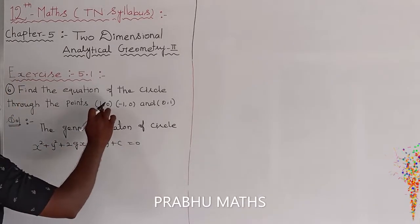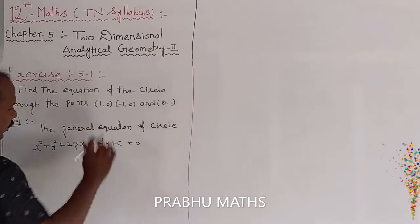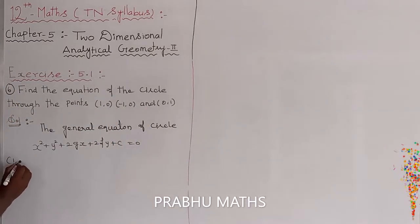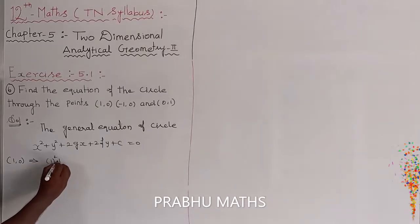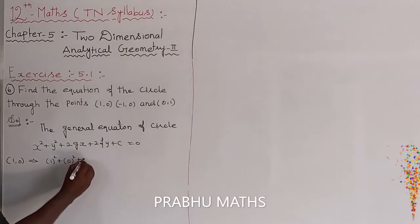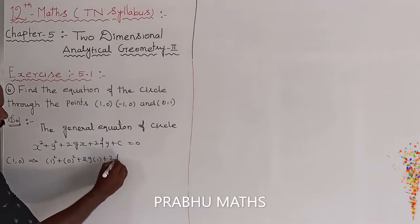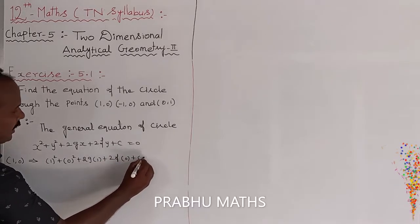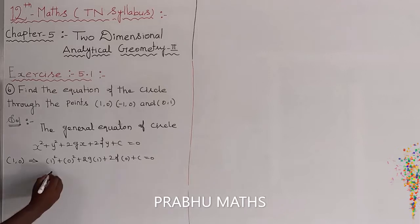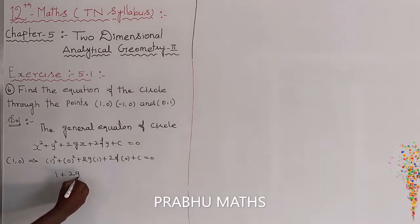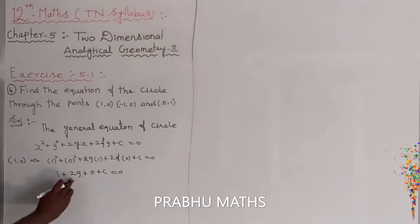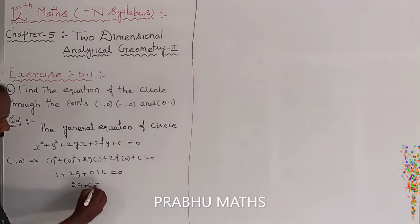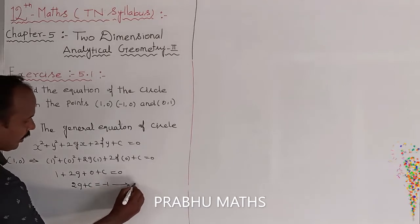That circle is passing through three points. The first point is (1, 0). Substituting the values of X and Y: 1 squared plus 0 squared plus 2G into 1 plus 2F into 0 plus C equals 0. Simplifying: 1 plus 2G plus 0 plus C equals 0, so 2G plus C equals minus 1. This is equation number 1.